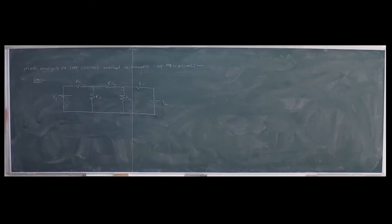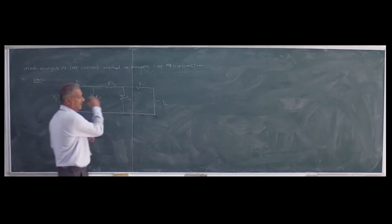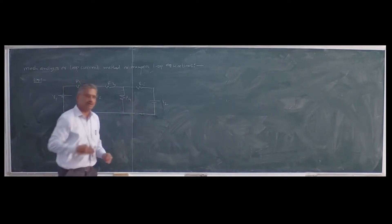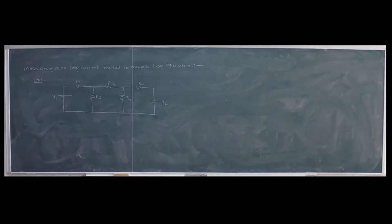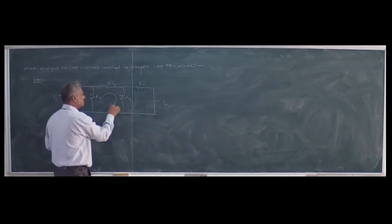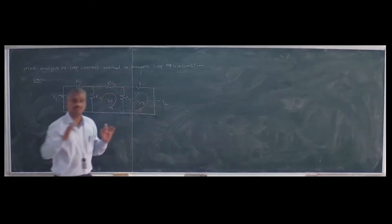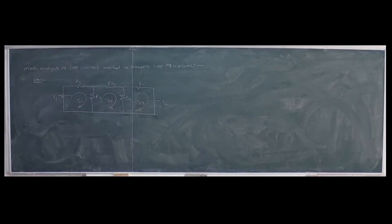First, draw the circuit. In this method it is assumed that each loop of the network has its own current. Here we have three loops: one, two, three. Theoretically, not actually — the assumption is that each loop has its own current. The first loop has current I1, the second loop has current I2, and the third loop has current I3. This is a theoretical assumption, not a practical calculation.